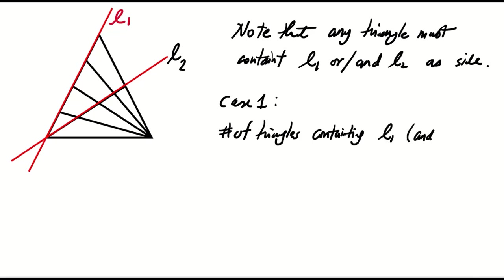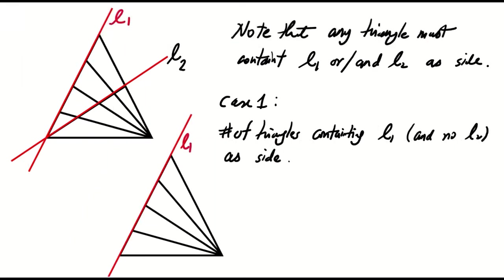Since a triangle has three sides and L1 is one of them, we need two more sides. This can be formed from the line segments a1, a2, a3, or a5.